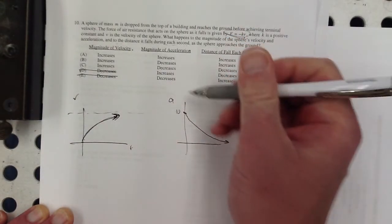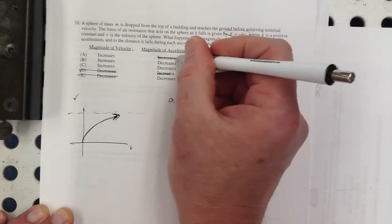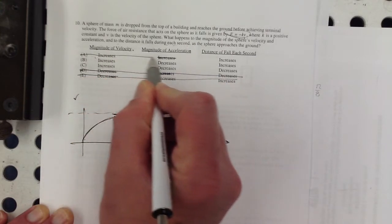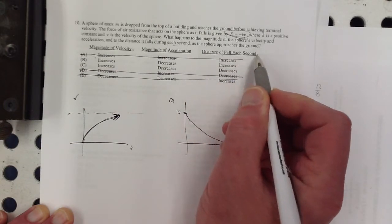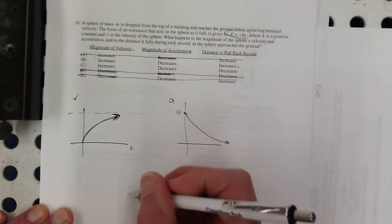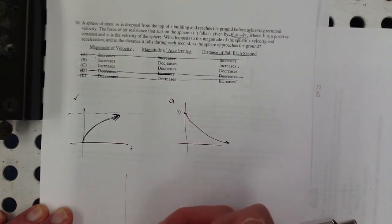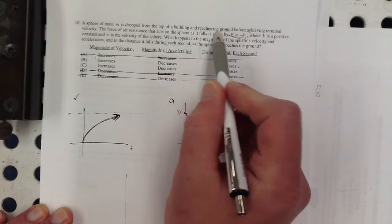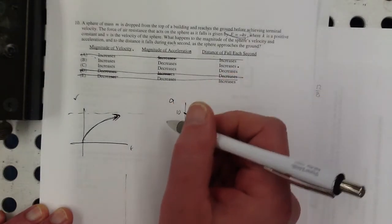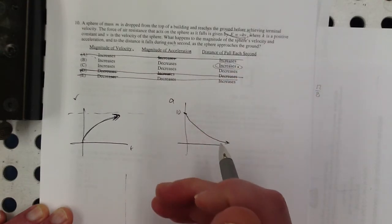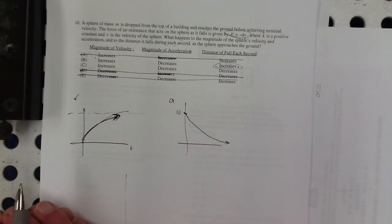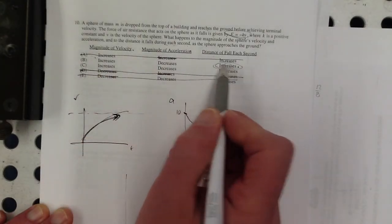The magnitude of the acceleration decreases. The ones that we can cross out, we can cross out the whole thing. And then the distance that it falls each second. Is that going to increase or decrease? Well, the velocity is reaching its terminal velocity. And although it kind of effectively sort of kind of gets there, it reaches the ground before achieving terminal velocity. Okay. So it is still accelerating, although by smaller and smaller amounts. So the distance that it falls each second is increasing, although it is doing that by smaller and smaller gains because of this approaching terminal velocity. So that would be answer choice B.